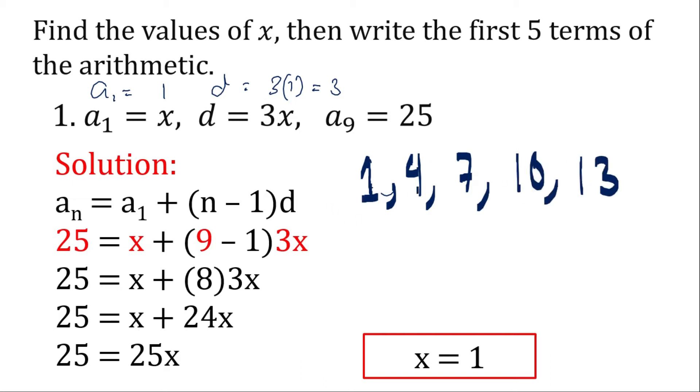Again, 1 plus 3 is 4, 4 plus 3 is 7, 7 plus 3 is 10, 10 plus 3 is 13. So these will be our first 5 values.